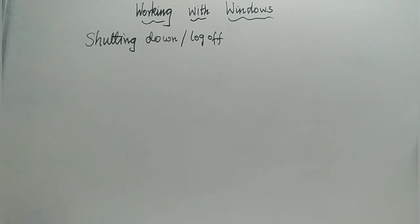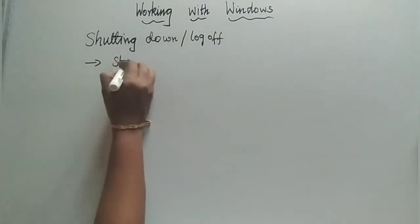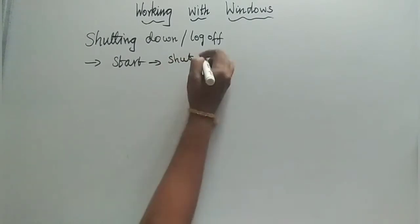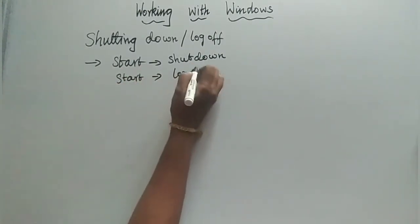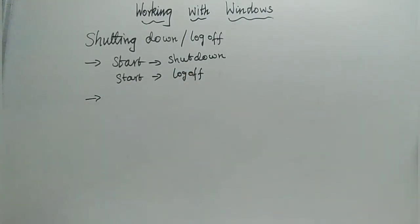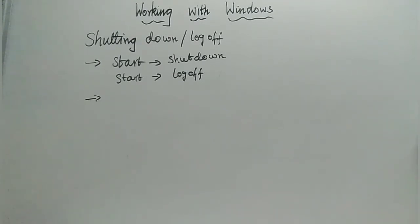To shut down, click Start then Shut Down. To log off, click Start then Log Off. When you click Shut Down, Windows will automatically close all open programs. If any programs are still open, it will display a message or button saying 'Force Shut Down.' If you want to proceed, click Force Shut Down.